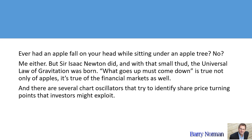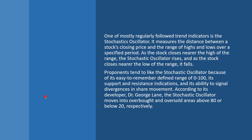What goes up must come down, and it's not true just for apples — it's also true for the financial markets. There are several chart oscillators that try to identify when assets are turning and investors might exploit those price movements. One of the more regularly followed trend indicators is Stochastics. It measures the distance between an asset's closing price and the range of highs and lows over a specific period.